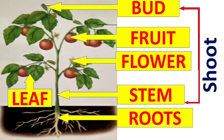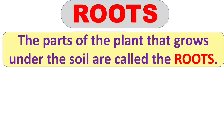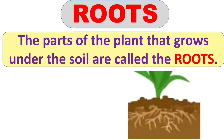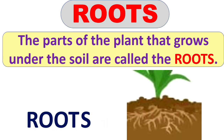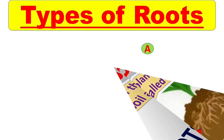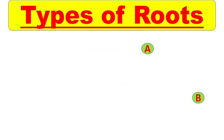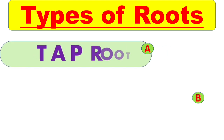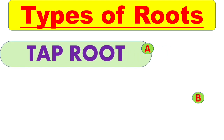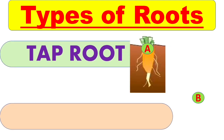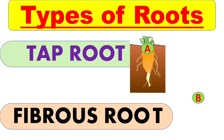First we will see what are roots and the different types of roots. The part of the plant that grows under the soil is called roots. Roots are mainly of two types: the first one is taproot and the second one is fibrous root.